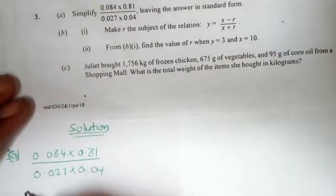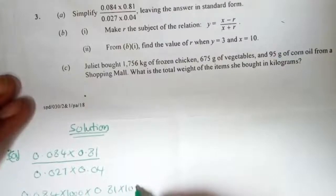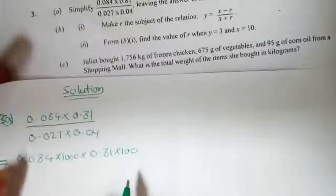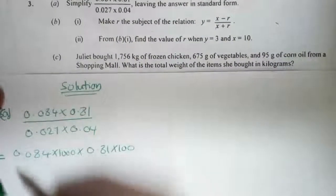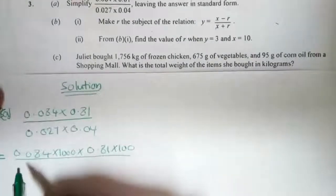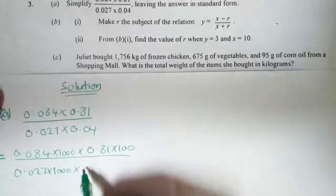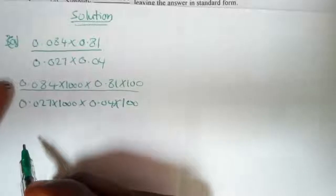The idea is to multiply out to eliminate the small decimal places. We multiply until we get whole numbers. So 0.084 multiplied by 1000 gives us 84, and 0.81 times 100 gives us 81. Since we multiplied the numerator by 1000 and 100, we have to do the same thing in the denominator.